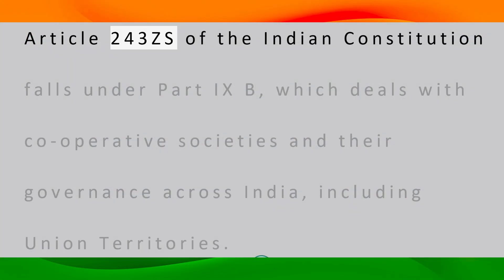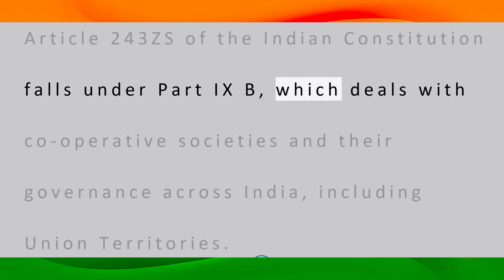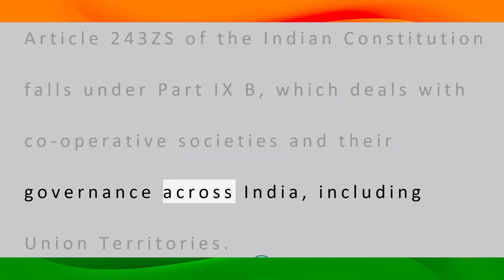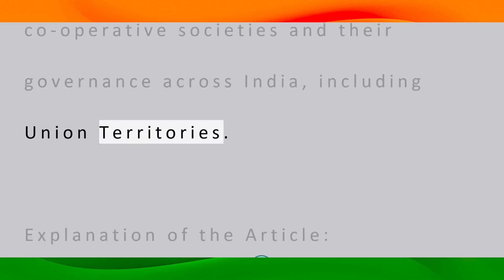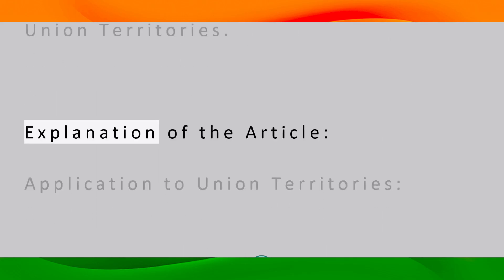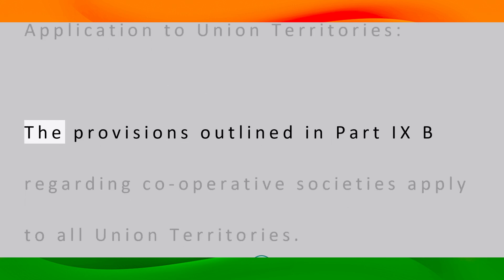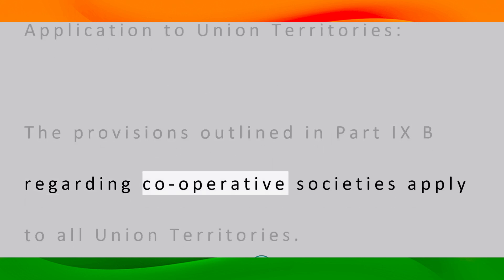Article 243ZS of the Indian Constitution falls under Part 9B, which deals with cooperative societies and their governance across India, including union territories. This article explains the application of Part 9B provisions to union territories.